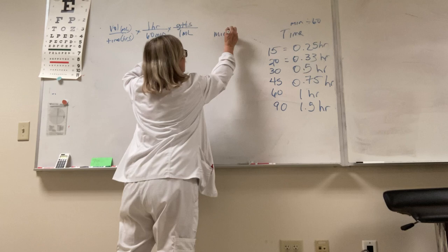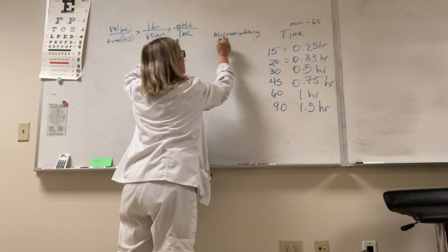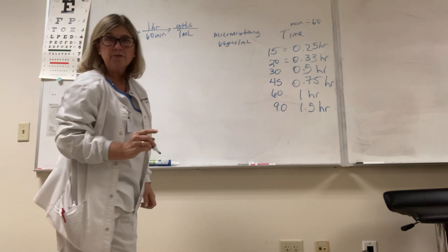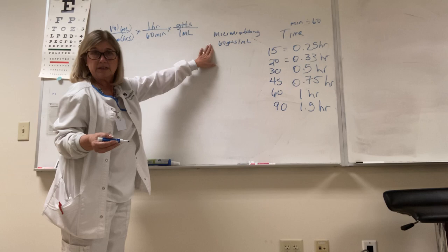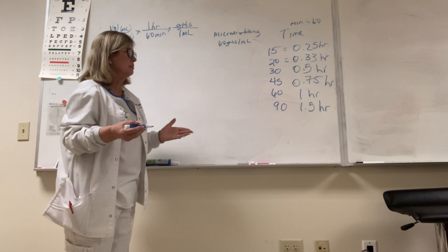So what I want to tell you is there is a code - it's called micro drip tubing, and the drop factor is always 60 drops per milliliter, always. So they are comfortable telling you that this is infusing with micro drip tubing, that means the drop factor is 60 drops per milliliter. You just have to memorize that fact. Otherwise, the drop factor will be given to you - 10 drops per milliliter, 20 drops per milliliter.